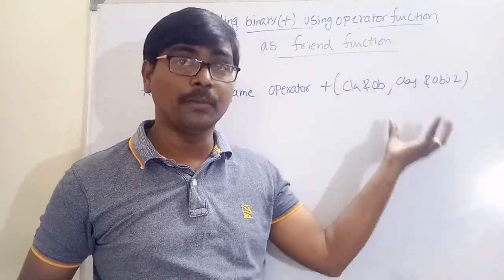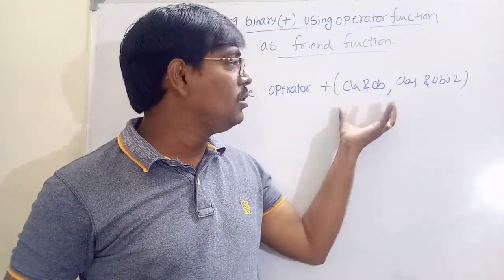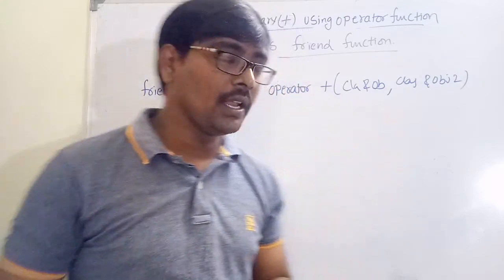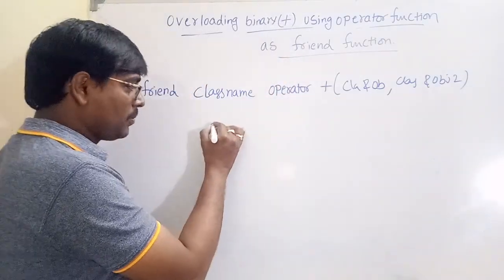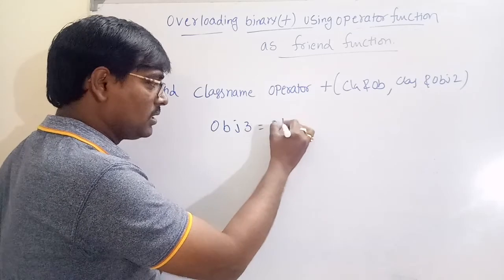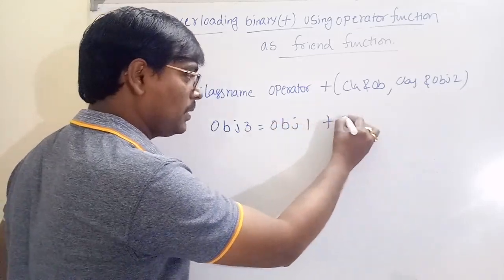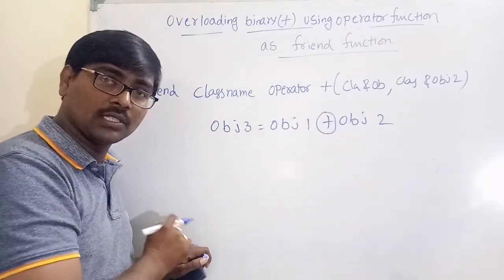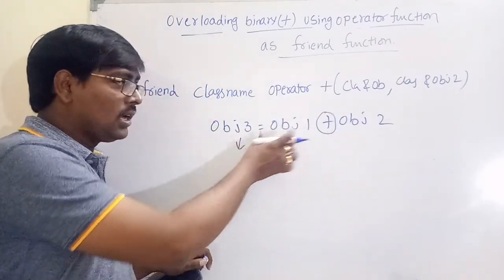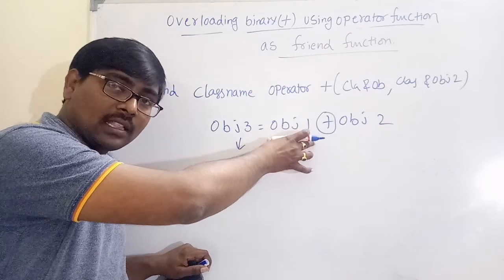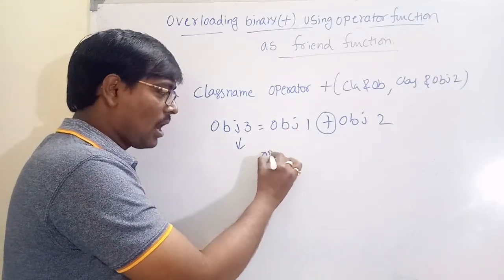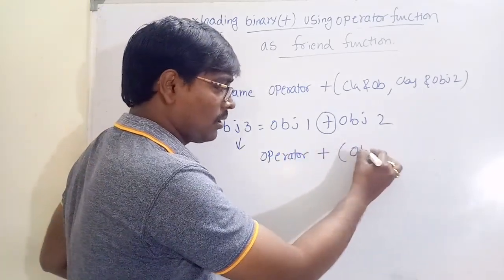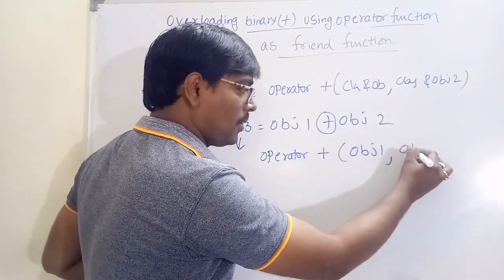In all cases, the arguments are objects — they are the values of the corresponding objects. Suppose you have the statement: object3 = object1 + object2. Here addition is performed between the objects. What the system actually calls is: operator+(object1, object2).